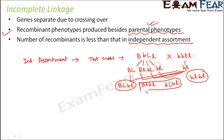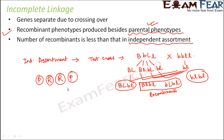Two types of offspring are like the parents and two are the recombinants. Basically, 50% of the offspring are recombinants and 50% are like parents — each with a probability of 25%. That is what happens in independent assortment.